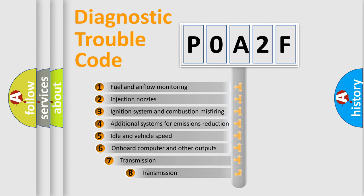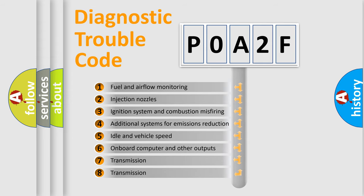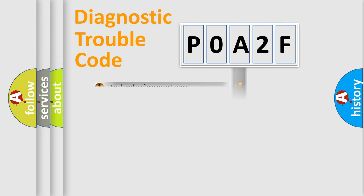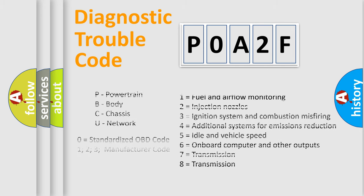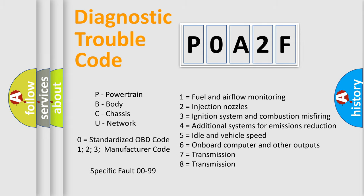The third character specifies a subset of errors. The distribution shown is valid only for the standardized DTC code. Only the last two characters define the specific fault of the group. Let's not forget that such a division is valid only if the second character code is expressed by the number zero.